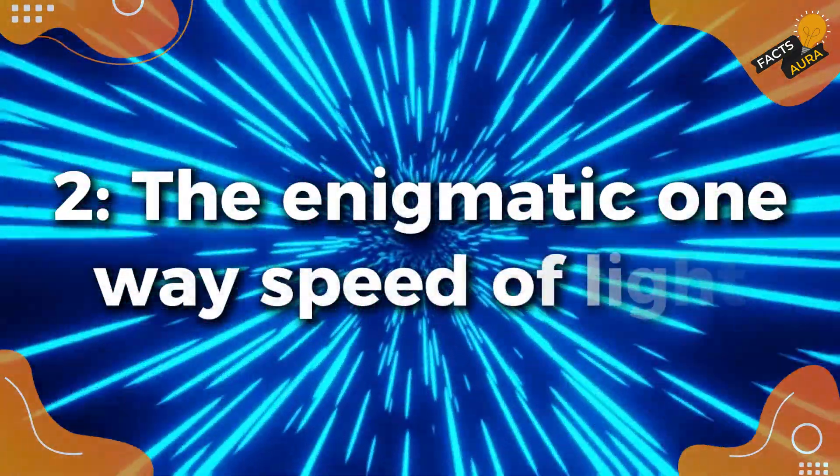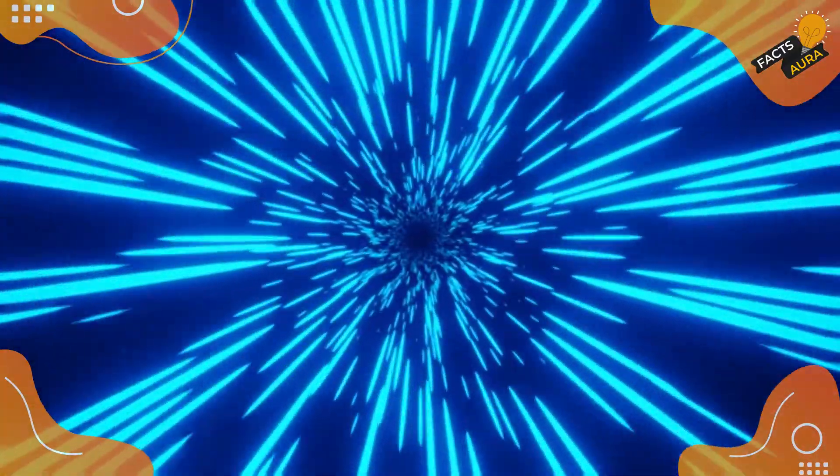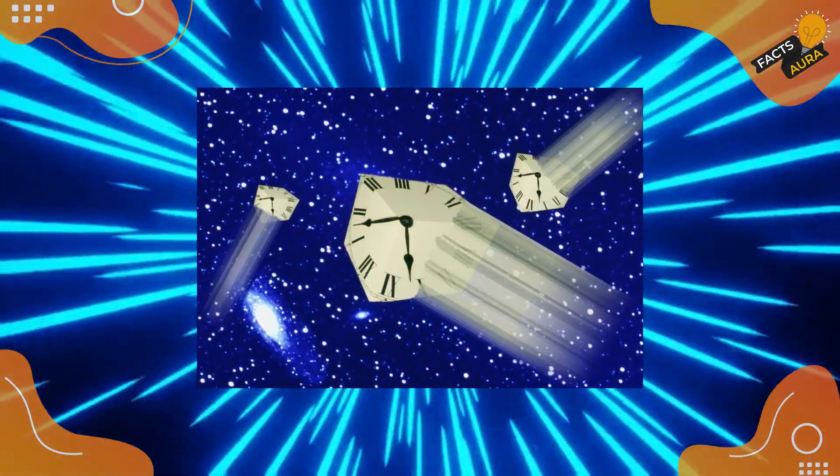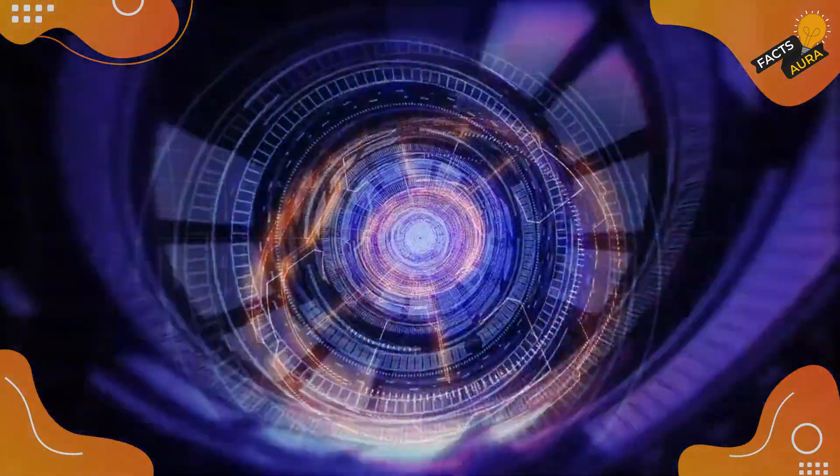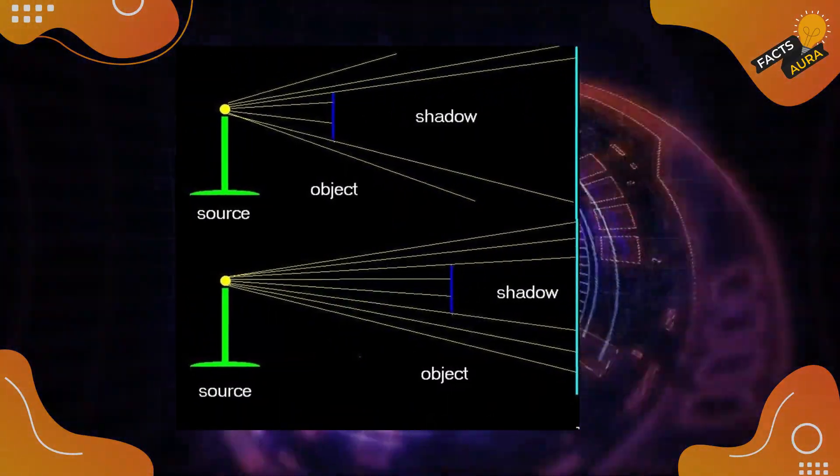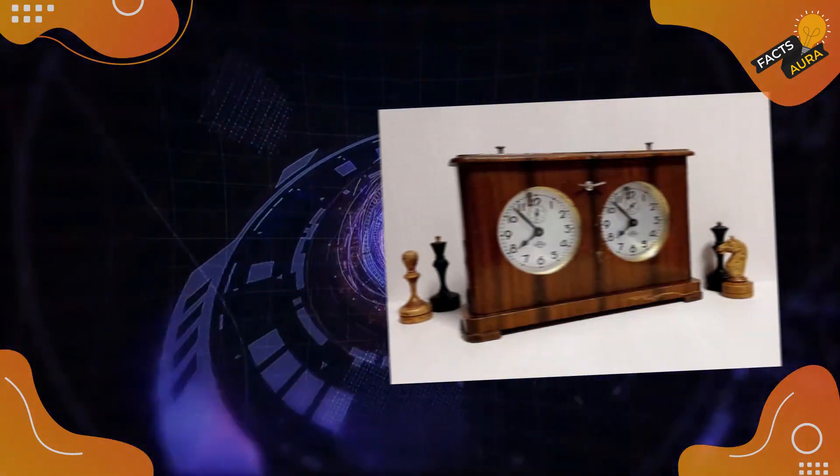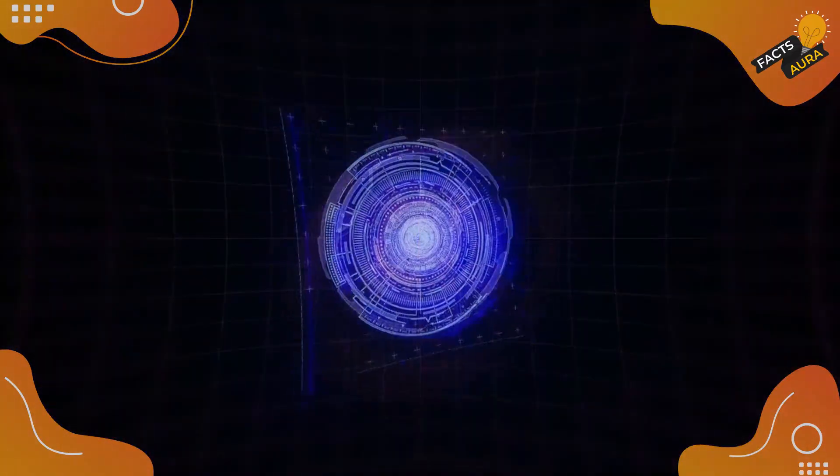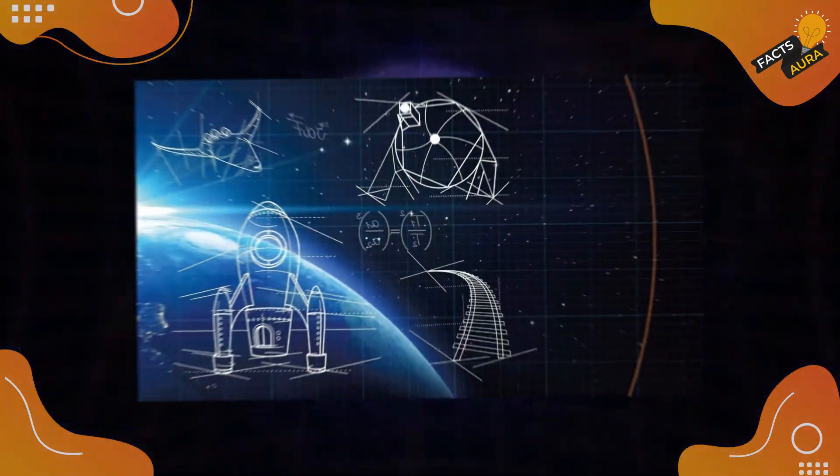The enigmatic one-way speed of light. Now, here's where the puzzle begins. Measuring the one-way speed of light requires two clocks, perfectly synchronized, positioned at both the start and end points of the light's journey. Why not simply place two clocks and hit start simultaneously, you ask? The answer leads us deep into the mysteries of physics.